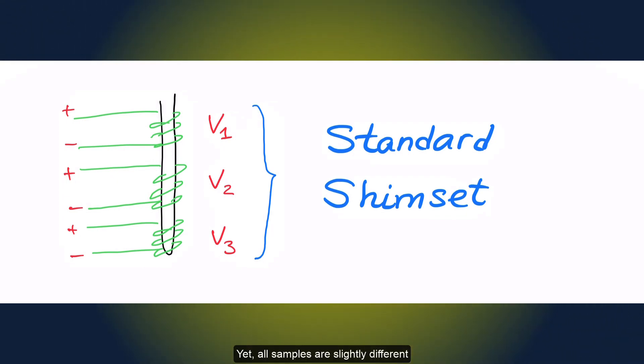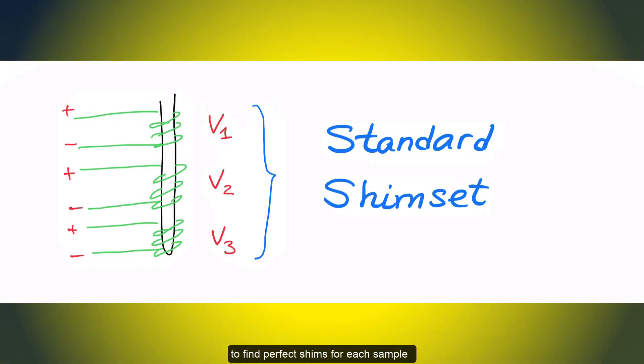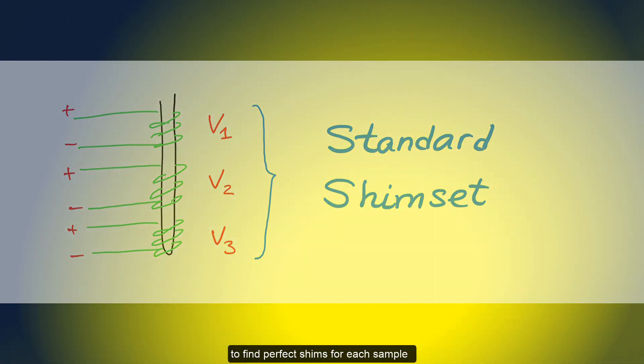Yet, all samples are slightly different. Therefore, we always need to shim additionally to find perfect shims for each sample.